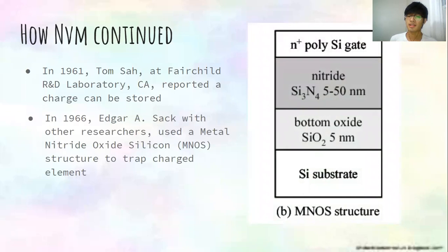And in 1966, Edgar Asak with his other researchers used the metal nitride oxide silicon structure to trap charge elements, which is shown on the side. MNOS is actually just another MOSFET, except its oxide layer gets replaced with a double layer of nitride and bottom oxide.